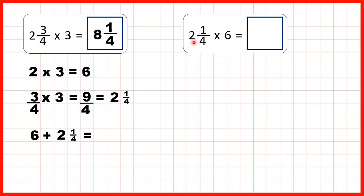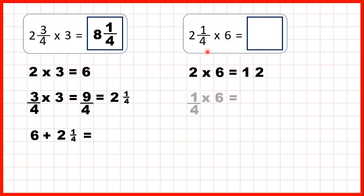Now let's try 2 and 1 quarter times 6. Remember we can multiply the whole number part of the mixed number first, then multiply the fraction part, then add up our answers. So 2 times 6 is 12, and we can work out 1 quarter times 6, and then add up our answers.